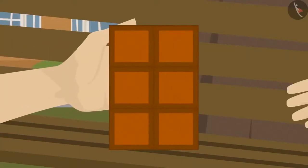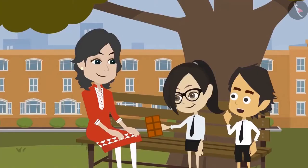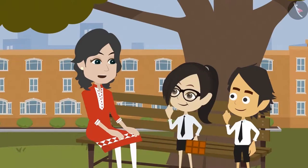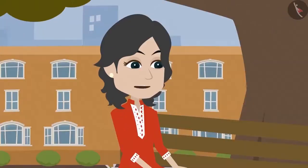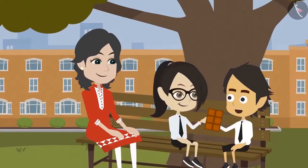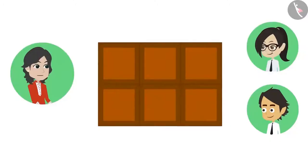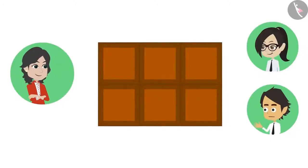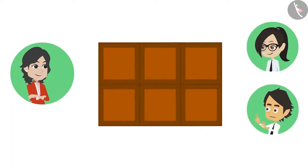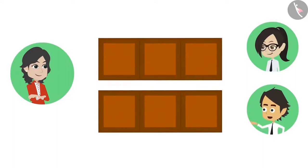I have got only one chocolate for both of you. You both divide this chocolate into half. I will divide this chocolate into half. In how many ways can you divide this chocolate into halves? This chocolate has six pieces. This is one way I can divide it into two equal parts — I will break this from the middle. Like this, there will be two equal parts.